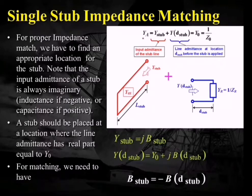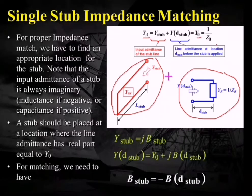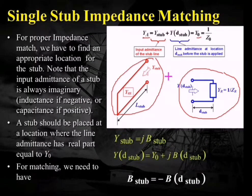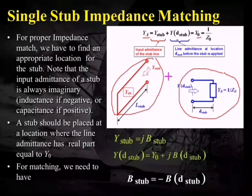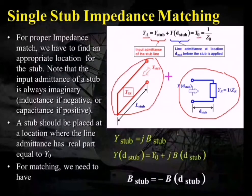YA should be equal to Y0, and YA is the sum of the admittances provided by the short-circuit stub plus this part of the transmission line along with the load admittance. Since Z0 consists only of a real value with no imaginary term, Y0 must also consist of only a real term. Therefore YA must also consist of only a real term. The admittance of a short-circuit stub is purely imaginary — J times B_stub.